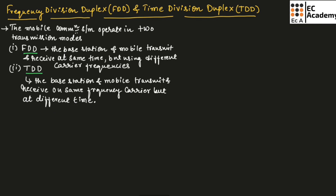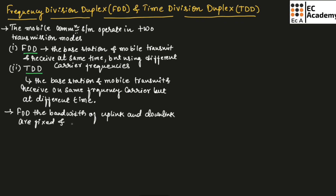This is similar to the process of FDMA and TDMA which we have understood in our previous videos. In FDD mode, the bandwidth of uplink and downlink are fixed and are usually the same. Hence, we can use FDD for voice communication in which uplink and downlink data rates are very similar.